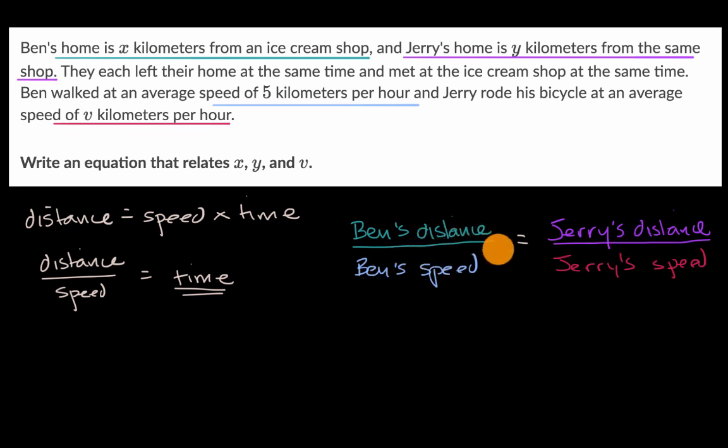Now, which of these do we know, or do we already have variables defined? Well, we know that Ben's distance from the ice cream shop is X. So this is represented by X. We know that Jerry's distance from the ice cream shop is represented by Y. So this is Y.